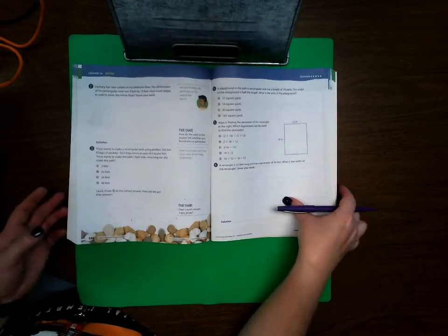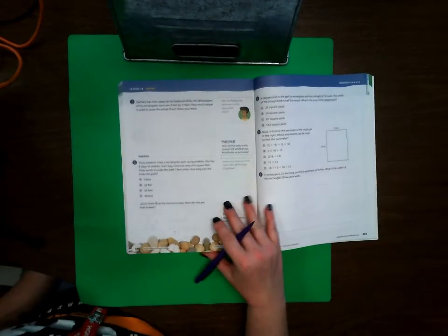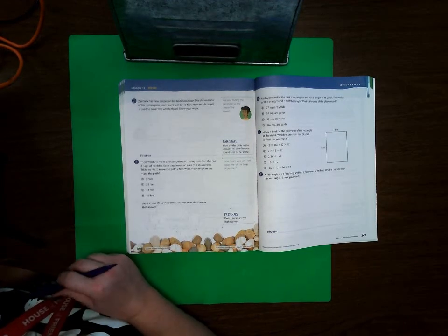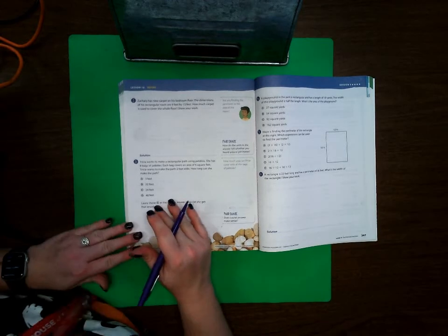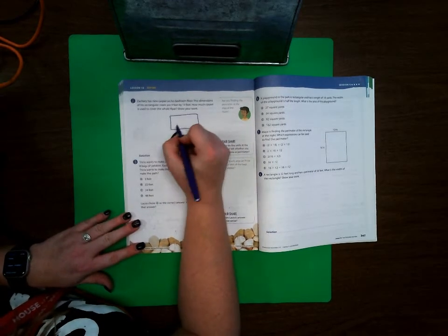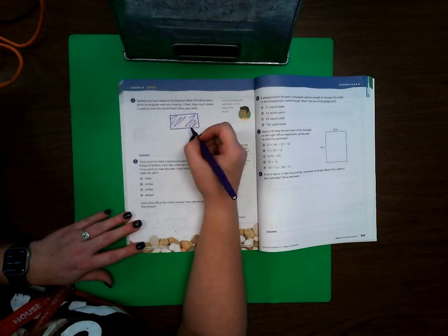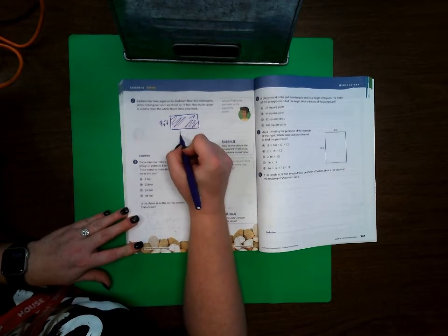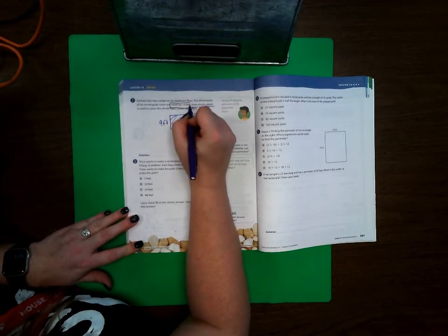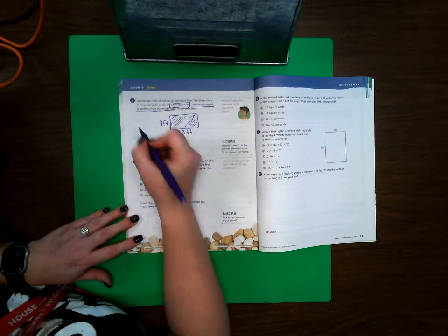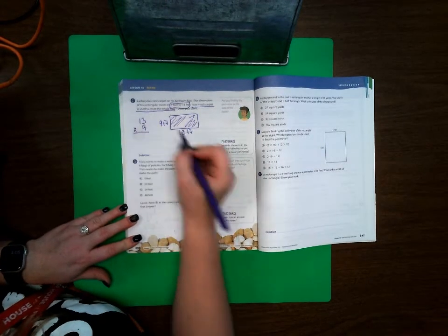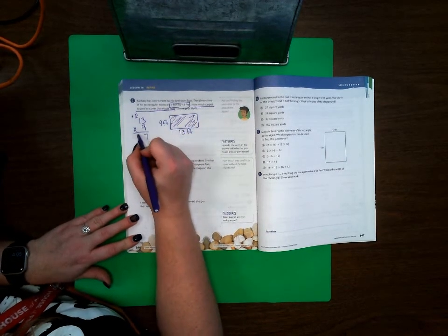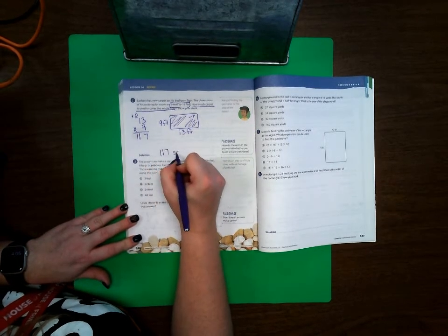Page 346, at the top here. Zachary has new carpet on his bedroom floor. The dimensions of his rectangular room are 9 feet by 13 feet. How much carpet is used to cover the whole floor? A carpet is something that's going to cover the whole floor. So we need to do 13 times 9 because that's how we find area. 9 times 3 is 27, 9 times 1 is 9, plus 2 more is 11. So it's going to be 117 square feet.